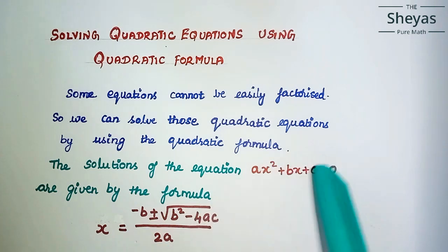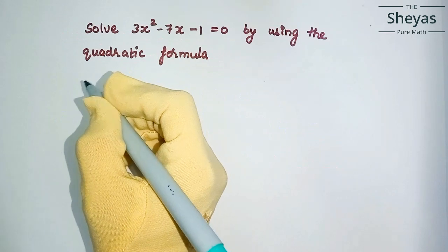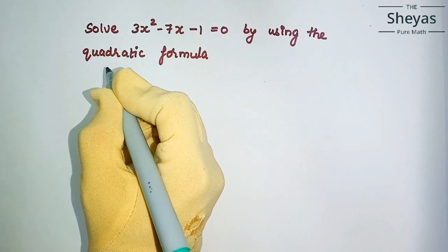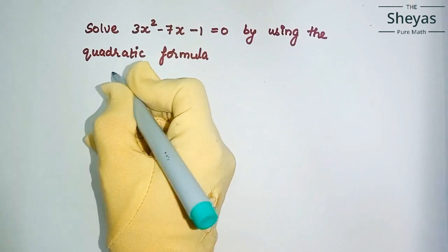You can solve this equation using this formula. Let us do one problem. The first problem is solve 3x squared minus 7x minus 1 equals 0.